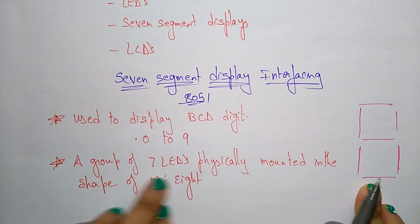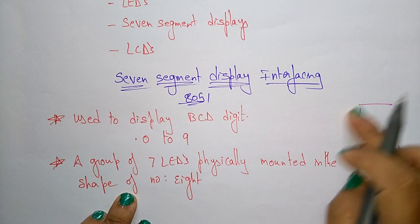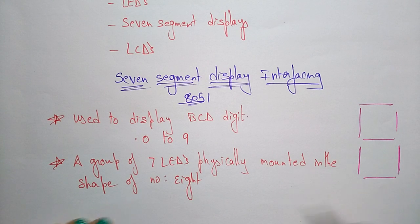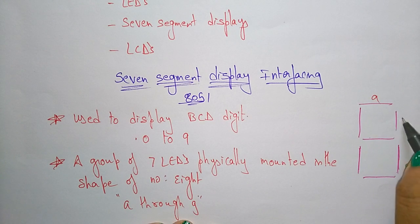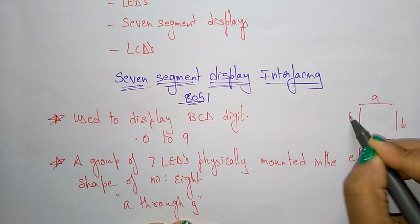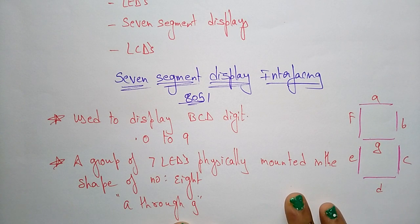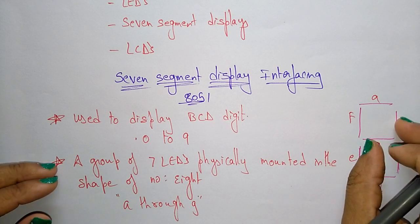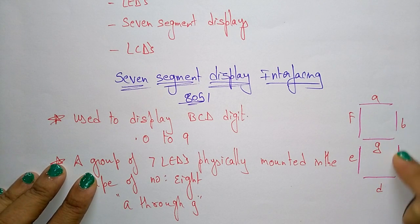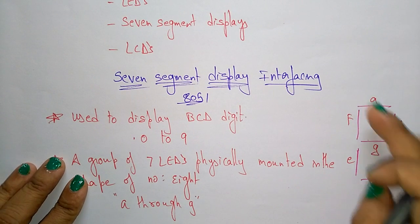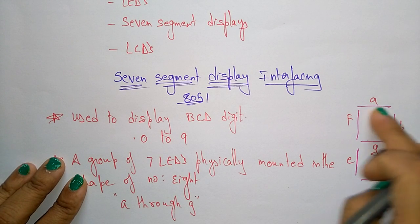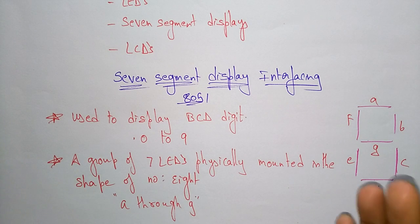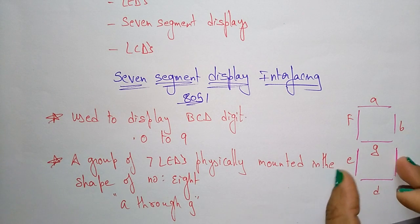The segments are labeled A through G. Based on the input, the corresponding LED segments will glow. For digit 1, only B and C segments are active. For digit 2, segments A, B, G, E, D are active. For digit 7, segments A, B, C are on and the rest are off.